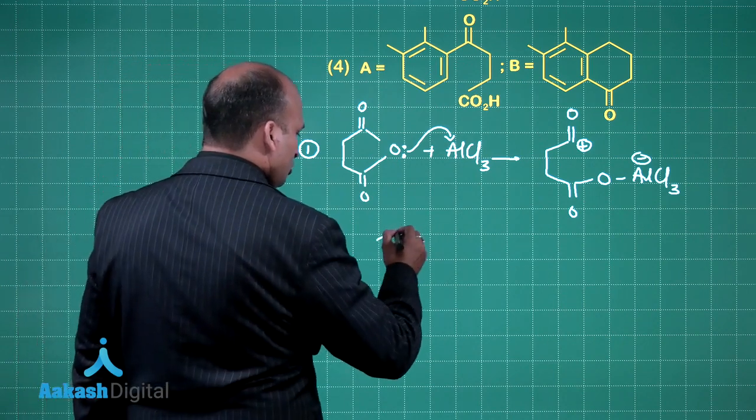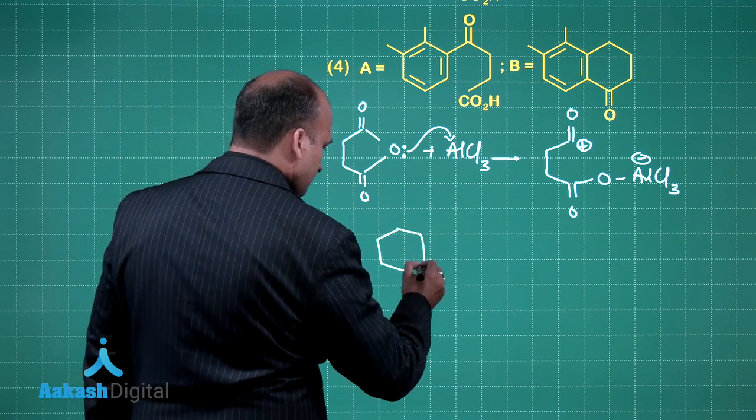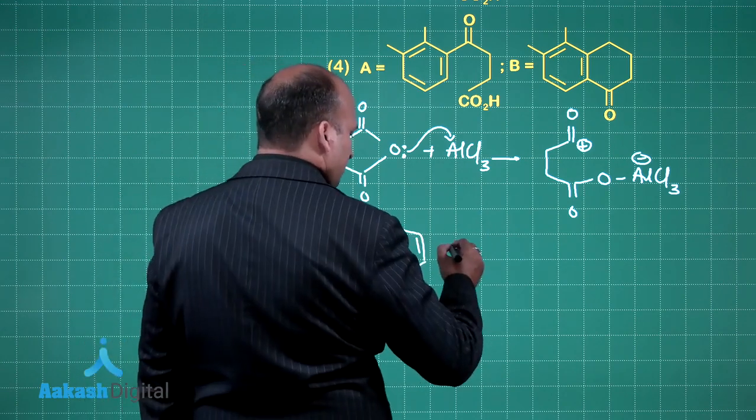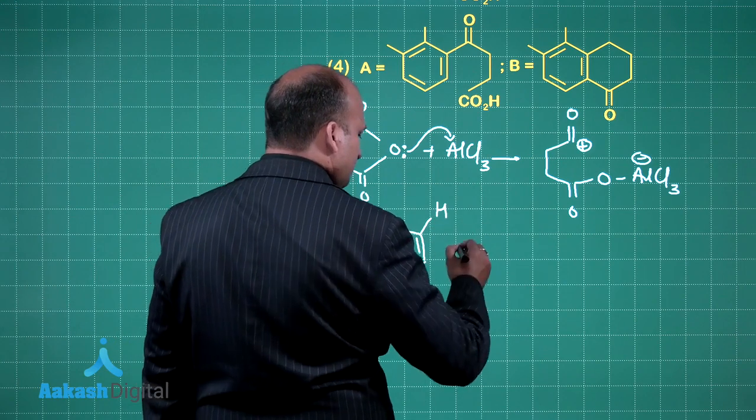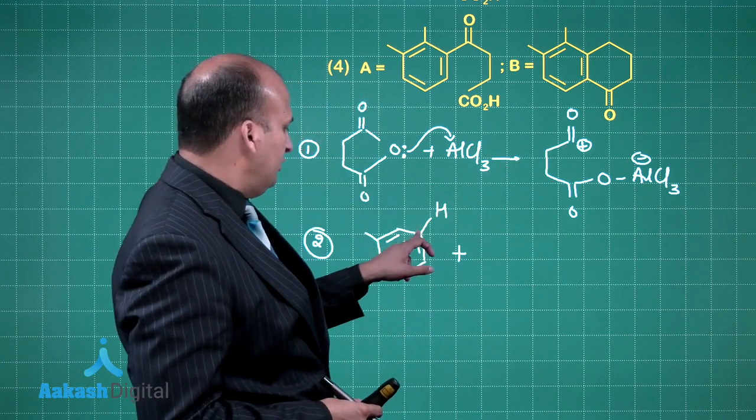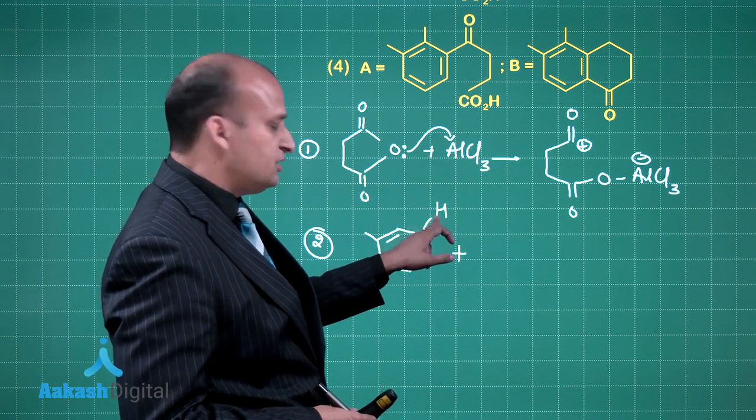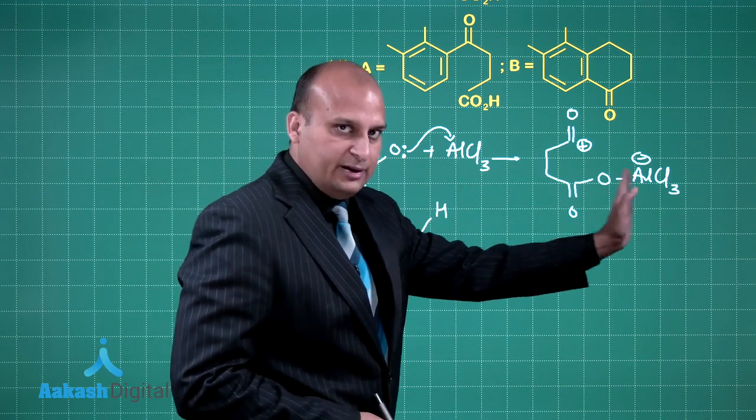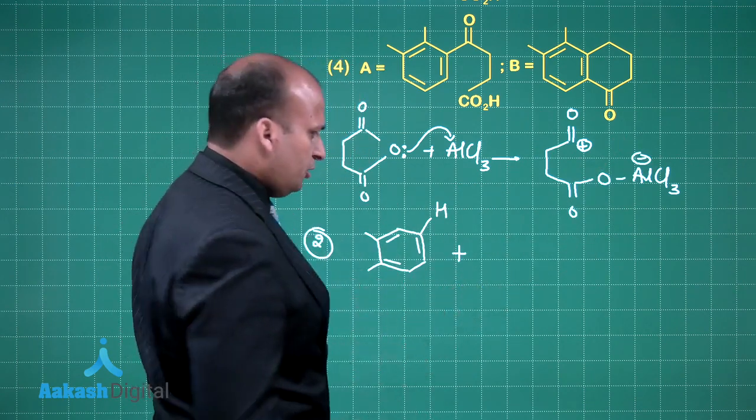In step number 2, this will be attacked. Supposing this is the hydrogen which we are substituting. So basically what will happen? This carbon will substitute this hydrogen, this H plus will then be attacked by the lone pair of oxygen and AlCl3 will come out, because AlCl3 has done the job.